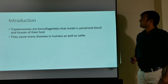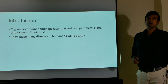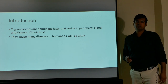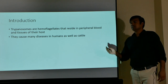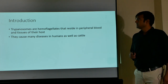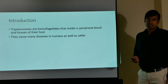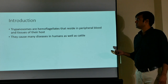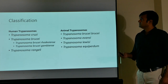Trypanosomes are hemoflagellates that reside in the peripheral blood and tissues of their host. If you get a question about hemoflagellates, you are supposed to mention trypanosomes. They cause many diseases in humans as well as cattle, so they are pathogenic to humans as well as to cattle in the human vicinity.